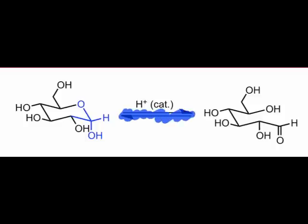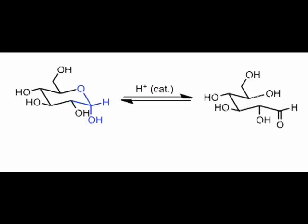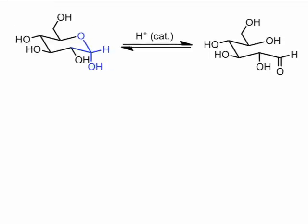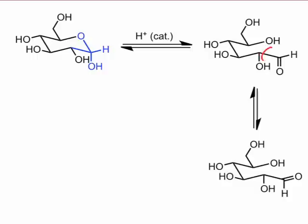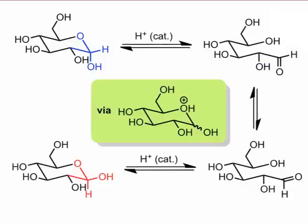Furthermore, it seems very easy to convert between the conformations leading to the alpha and beta-anomers. All we have to do is rotate around a carbon-carbon bond. Thus, we might expect the alpha and beta-anomers to be in equilibrium with one another too.